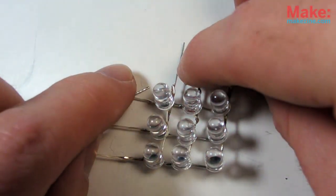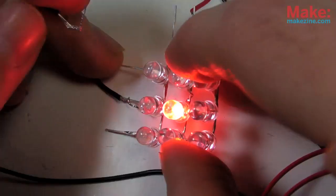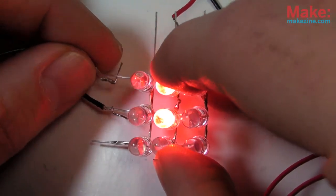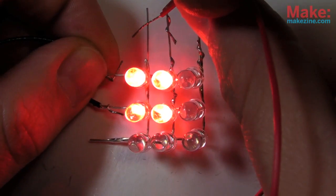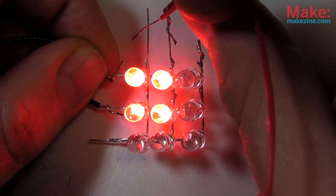But this method only works for controlling one column or row at a time. If I try to light the top left LED, I end up also powering a few others I don't want.